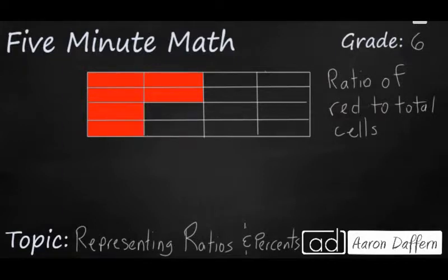Hello and welcome to 5-Minute Math. Today we are looking at the 6th grade concept of ratios and percents, specifically how we can represent them in multiple ways, and we'll do it in 5 minutes or less. We have a basic fraction here represented with this rectangle, and we're looking first off for the ratio of the red cells to the total number of cells.